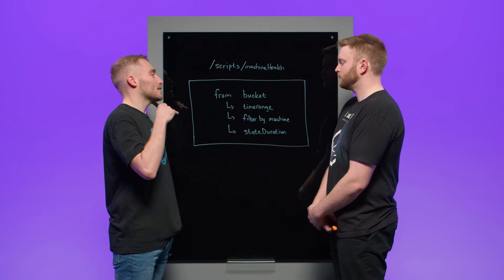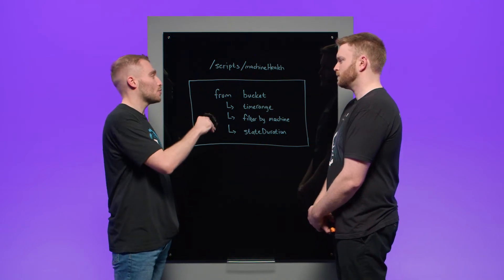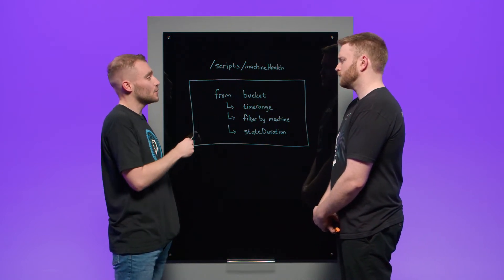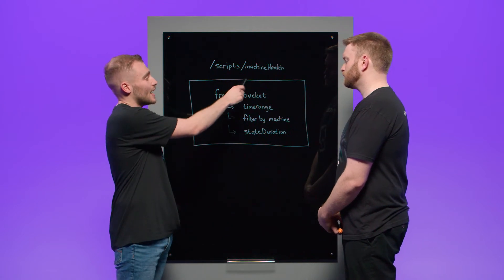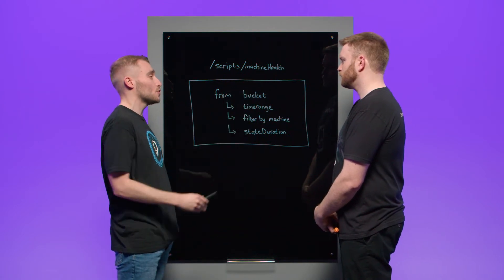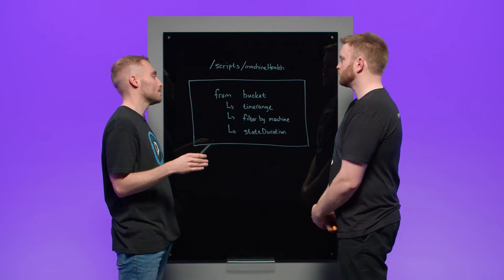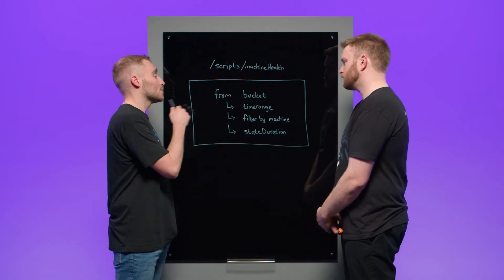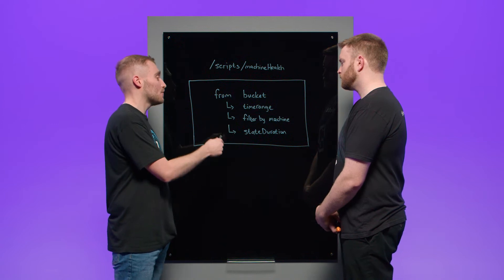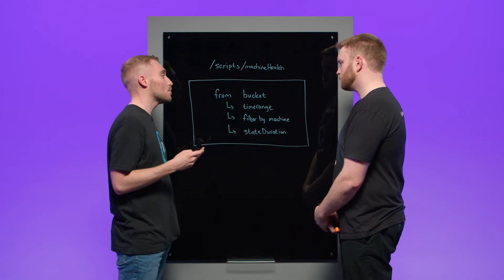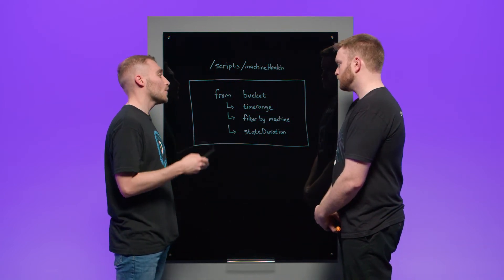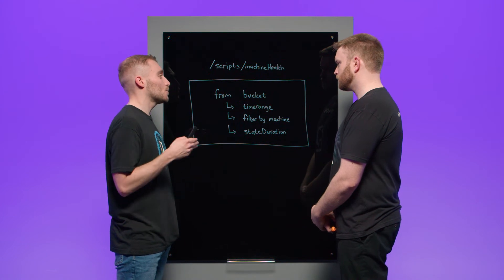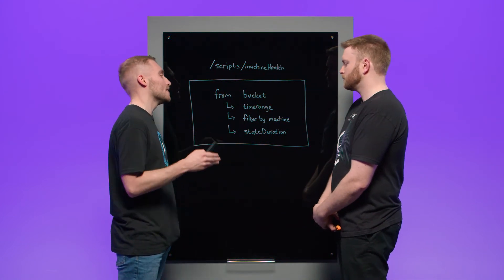If we take this from a high-level view, it's actually quite simple in its structure. First, what I need to do is define a unique endpoint — in this case I've defined 'machine health' as my unique endpoint. Next, I need to define my custom Flux query. In this case we just wrote some pseudocode — I'm essentially going to collect some data from my bucket from a specific time range, filter by the machine, and then return the total duration of each state that machine was in.